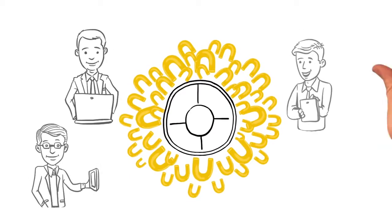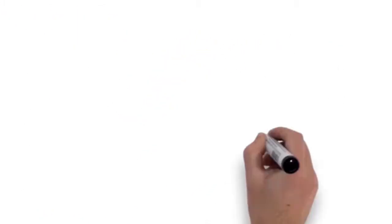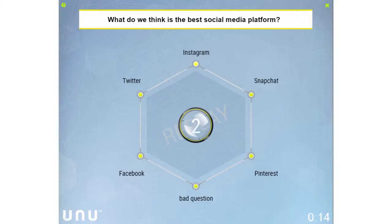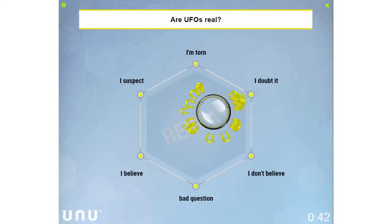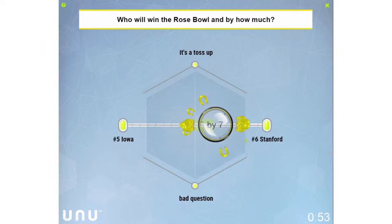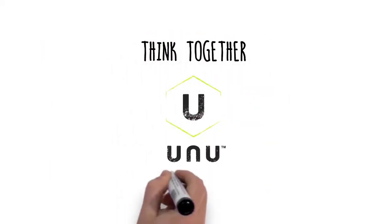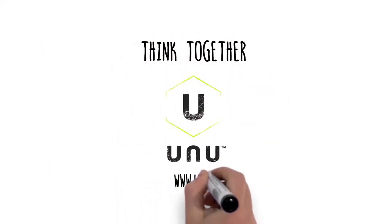We call each swarm an UNU. Combining their wisdom and intuition into an UNU swarm, social groups can be smarter together, more insightful, more creative, and best of all, more fun. Think together at www.unu.ai